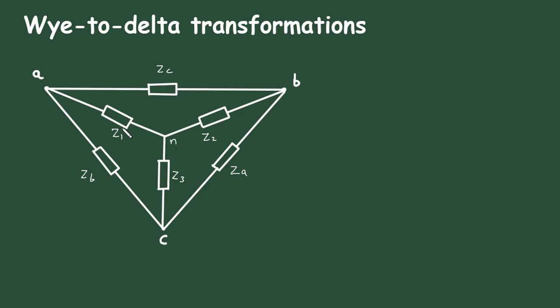If we have the value for Z1, Z2 and Z3 and we have to find ZA, ZB and ZC. So ZA is equal to, what we have to do, we have to multiply Z1 into Z2, so it will be Z1 into Z2, then Z2 into Z3, Z2 into Z3, then plus Z3 into Z1.